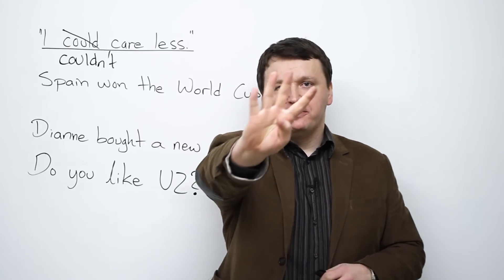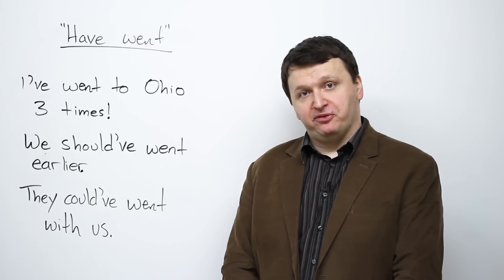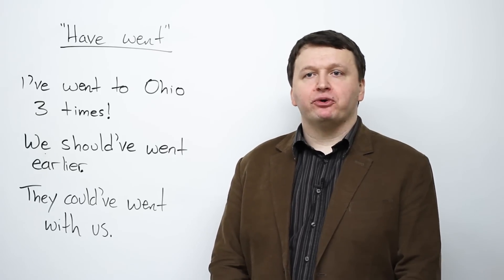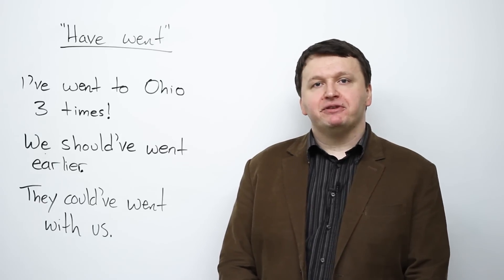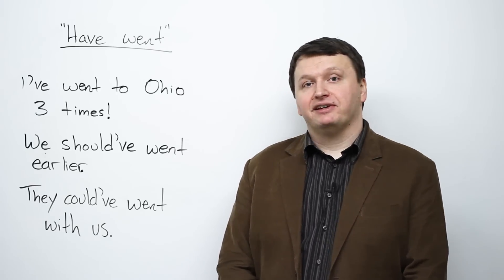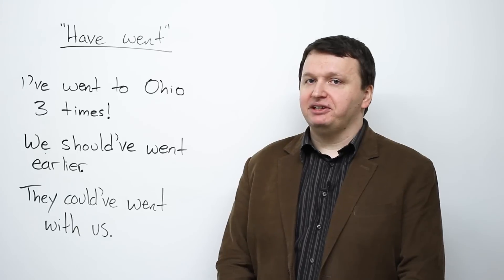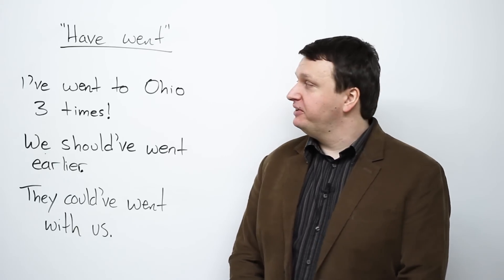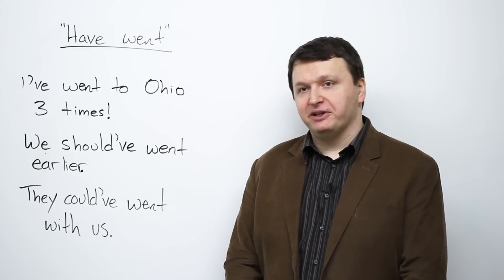Now let's move on to number four: 'have went'. This is a problem of using the incorrect verb form. In English, you have three verb forms for each verb. With the verb 'go', we have the present 'go', the past 'went', and the past participle used in perfect forms, which is 'gone'. So when you use 'have + went', you actually mean 'have gone'. Here are three examples: 'I've went to Ohio three times', 'We should have went earlier', 'They could have went with us' — all wrong.